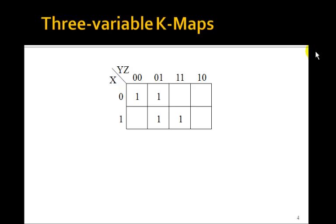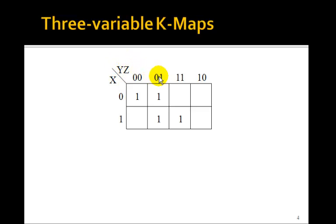Now let's look at a three-variable K-map. x is still 0 and 1 for the rows. For columns we need y and z, labeled 00, 01 — then the trick: the third column must be 11, not 10, because in going from column to column only one variable can change. The fourth column is y=1, z=0. Let's take these four min terms: 0, 0, 0; 0, 1, 1; 1, 0, 1; 1, 1, 1.